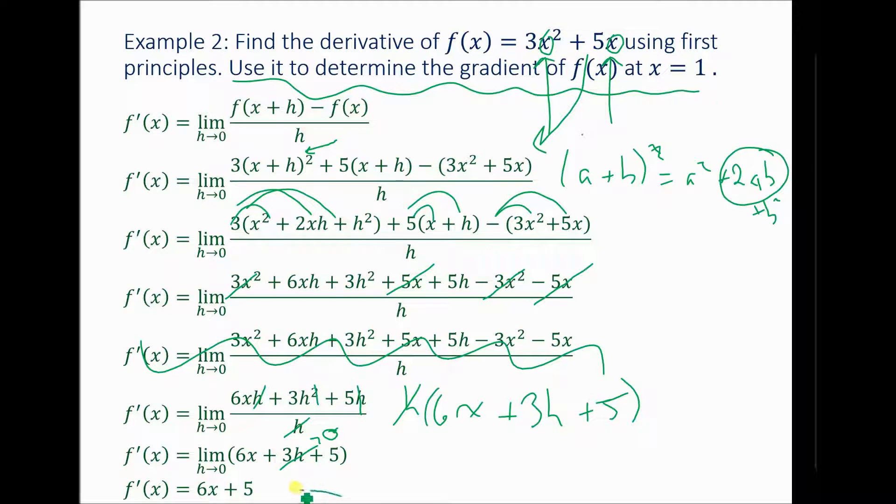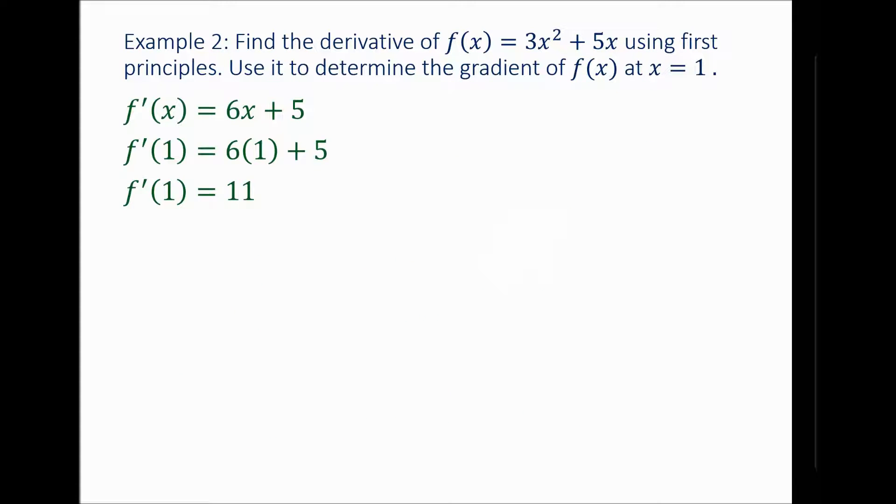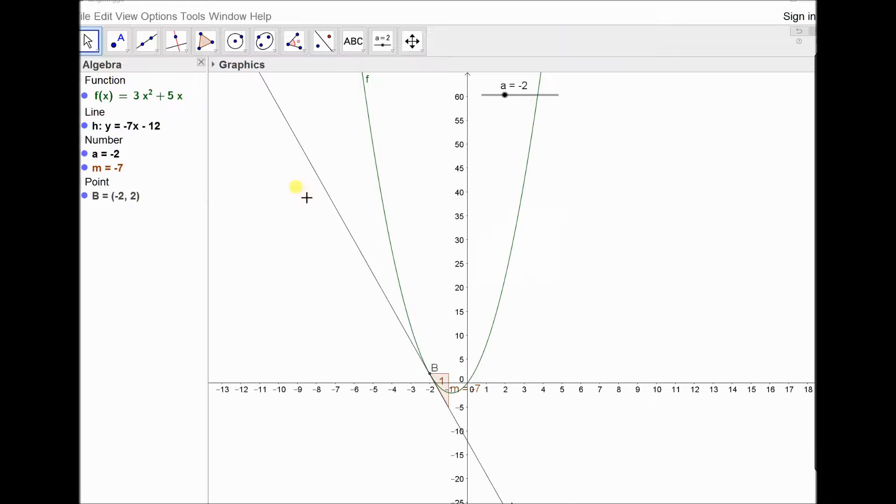Well, that means this function here tells me what gradients are. So let's just plug in 1. So if I put 1 in the function, I end up with 11. Let's just go to the graph 1 last time and confirm that that is true. Fast forward a little bit if you want to just see how to expand on the CAS. So now I've got my new function graphed here, 3x squared plus 5x.